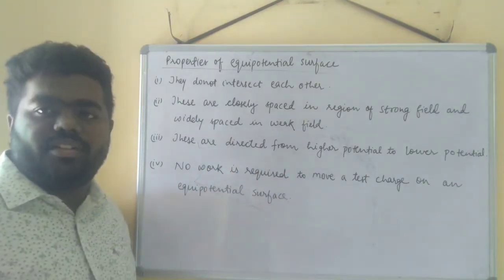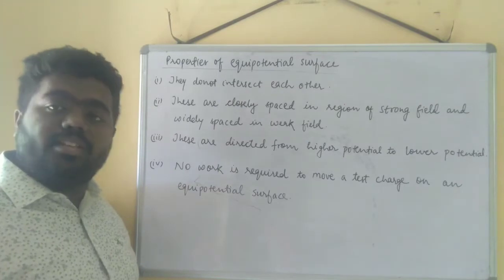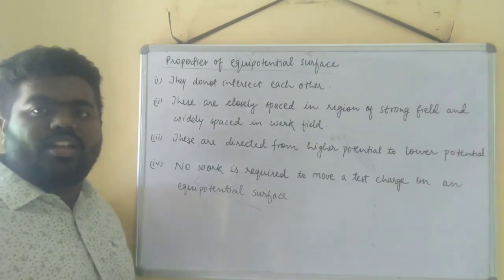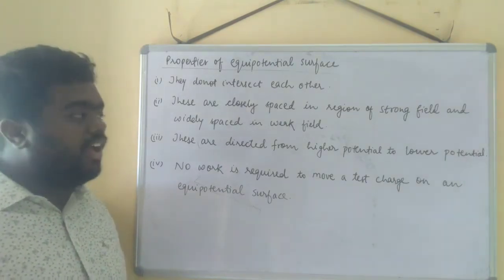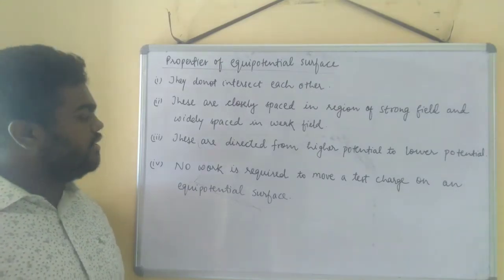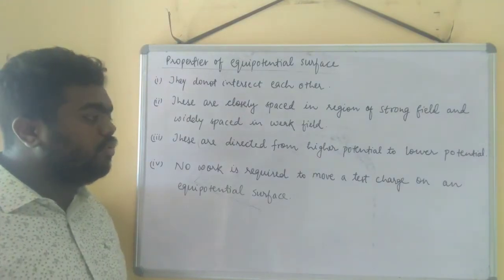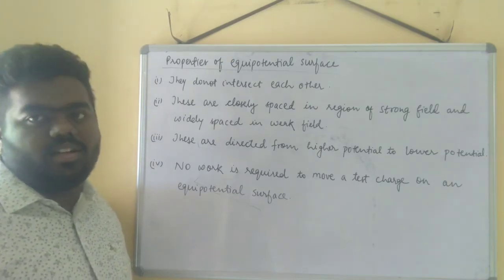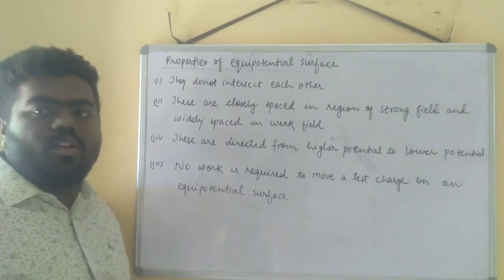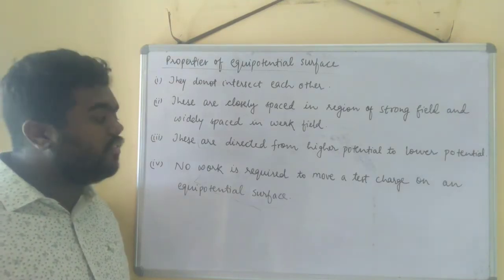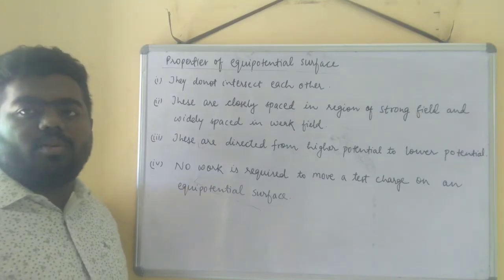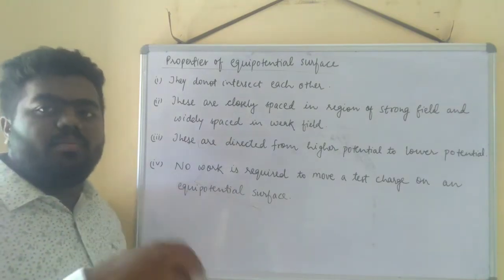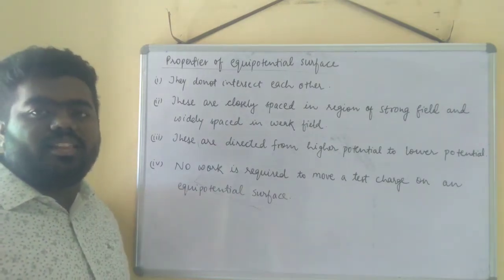Third property: equipotential surfaces go from higher potential to lower potential — higher potential is positive and lower potential is negative, meaning they go from positive to negative. Fourth property: no work is required to move a test charge on an equipotential surface. No work will be done in that case.